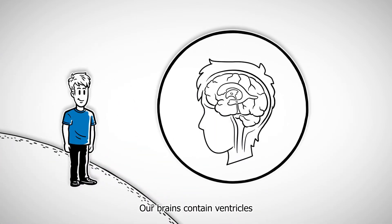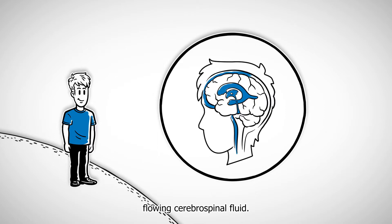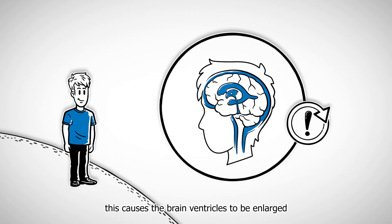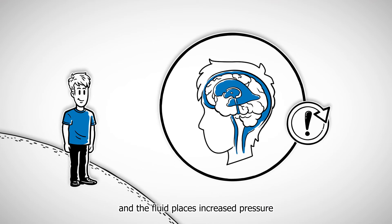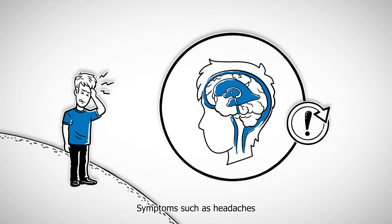Our brains contain ventricles that are surrounded by flowing cerebrospinal fluid. In the case of hydrocephalus, the cycle of that fluid's production and absorption is disturbed. This causes the brain ventricles to be enlarged and the fluid places increased pressure on the brain. Symptoms such as headaches and later serious brain damage can result.